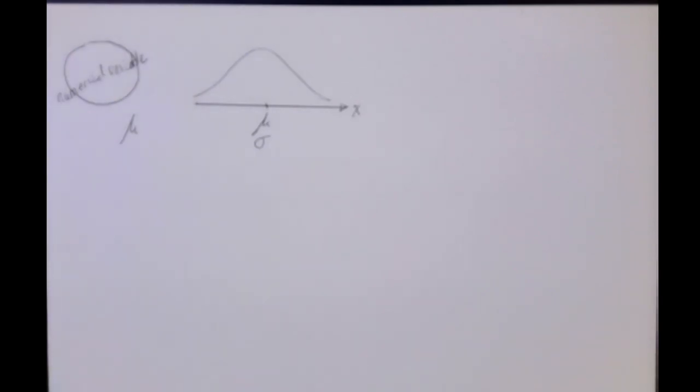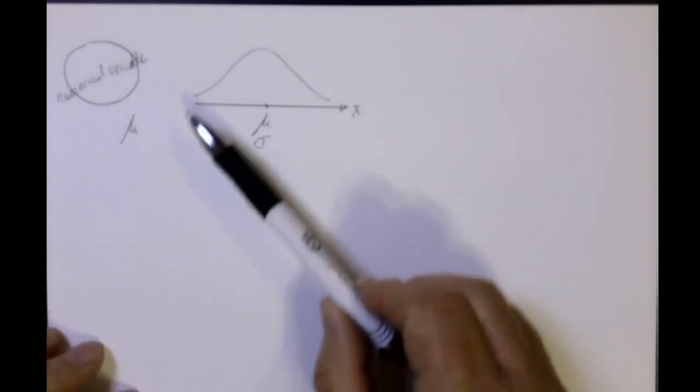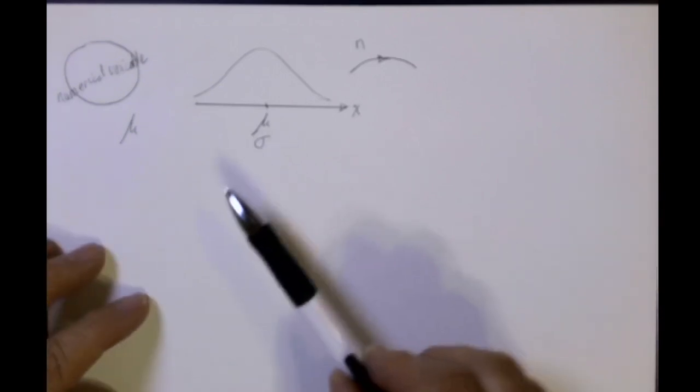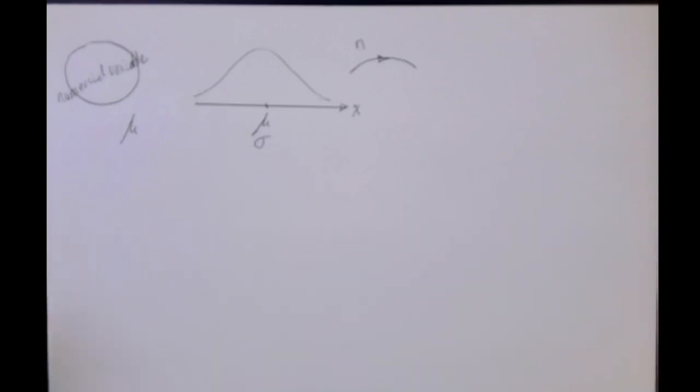This population may or may not be normally distributed. We're going to look at samples of size n. In fact we're going to look at every sample of size n and calculate the mean for each one of those samples. We're interested in the distribution of all of those sample means.